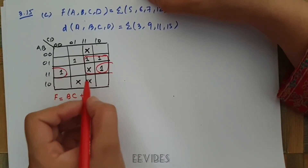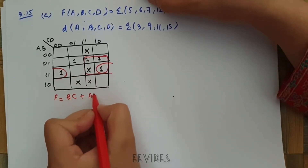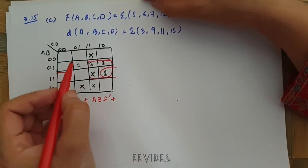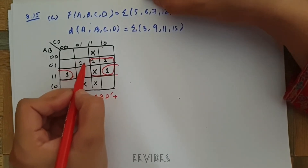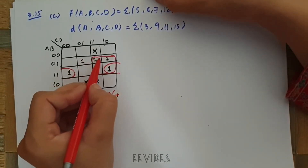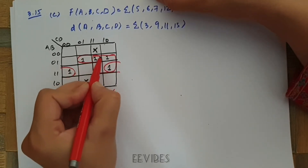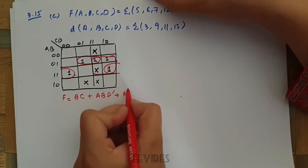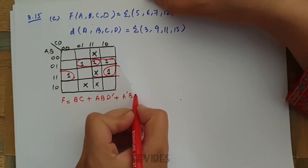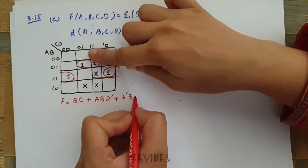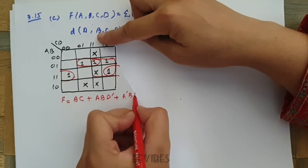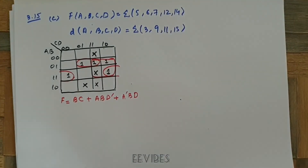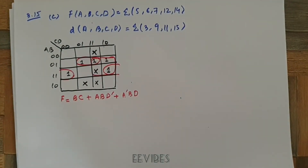Next, we can combine these two ones — since this one cannot be merged with any other box — and the expression will be A'BD complement. We are left with one minterm, which can be combined with the consecutive one present, giving the expression A'BD. So the simplified expression of the function is F = BC + A'BD' + A'BD.